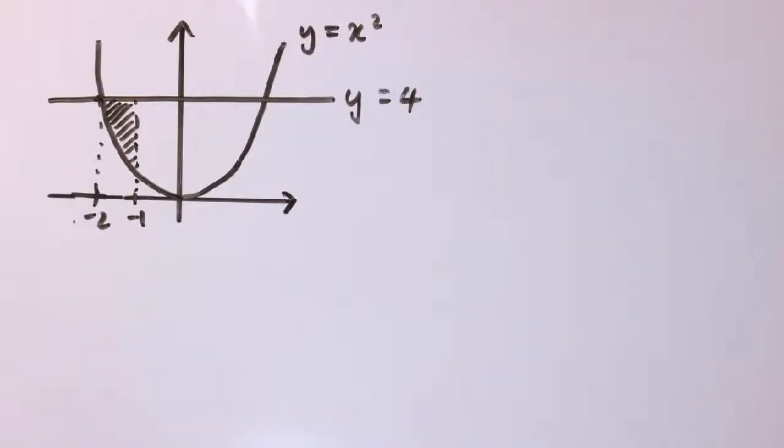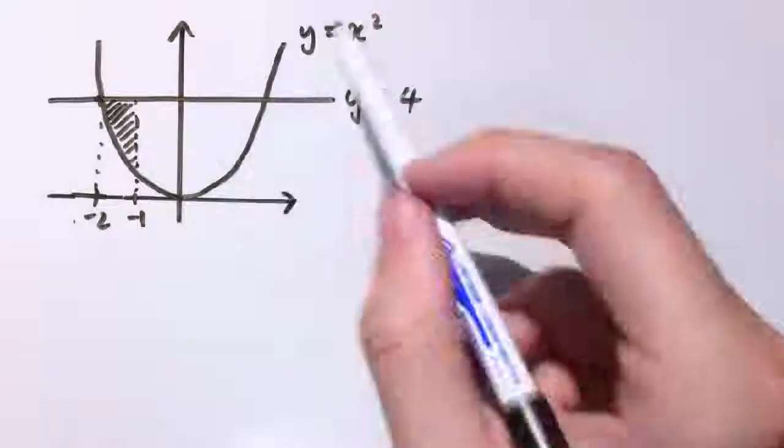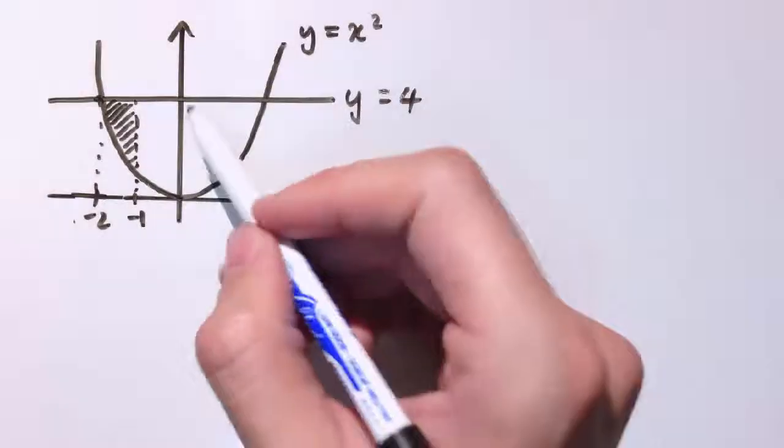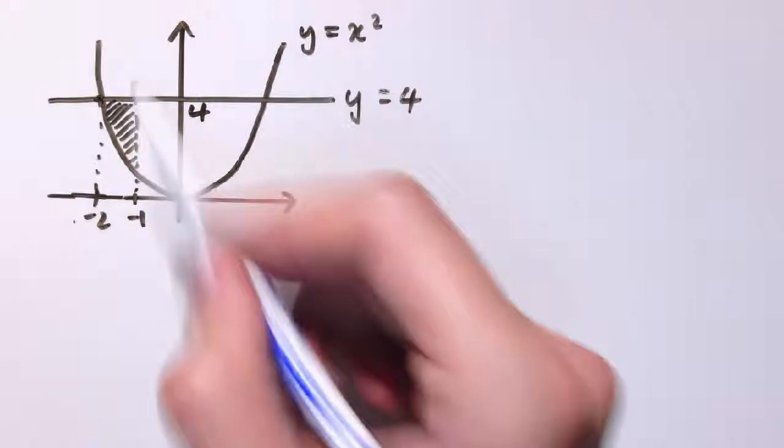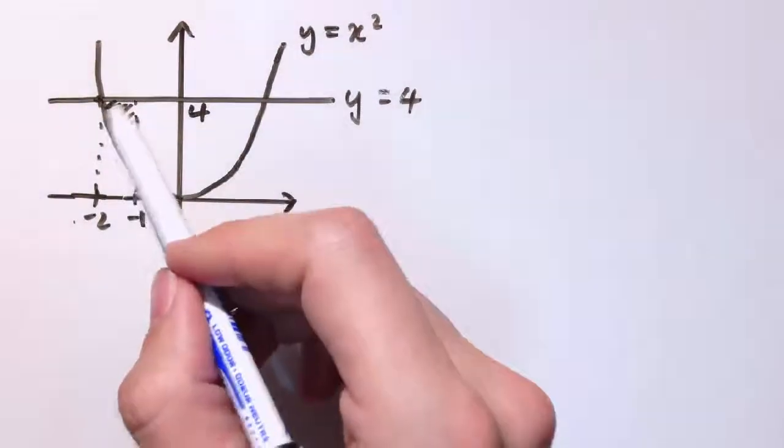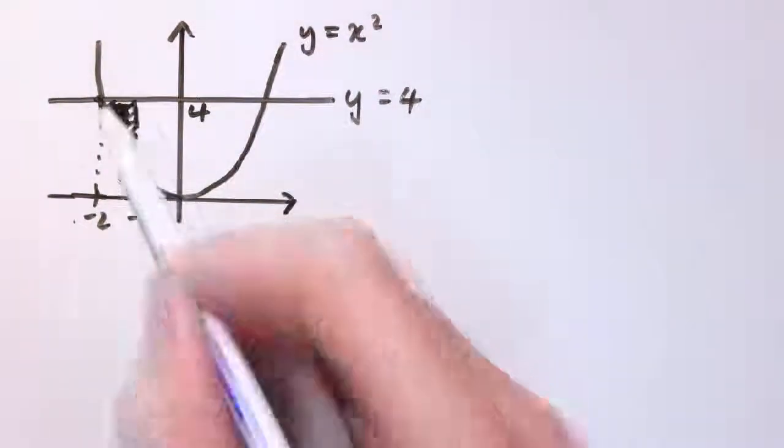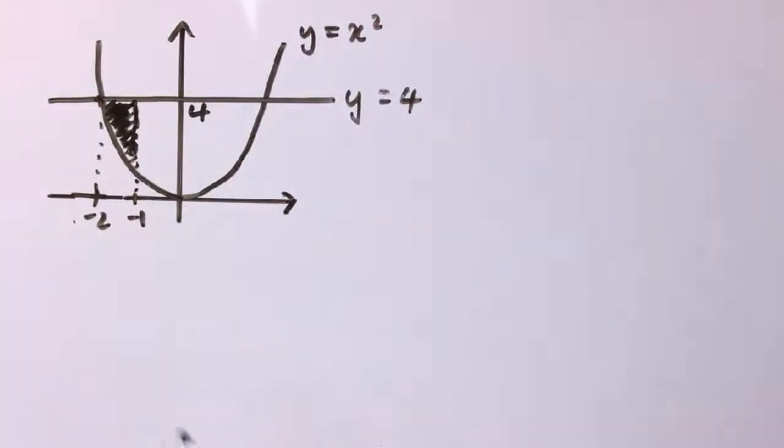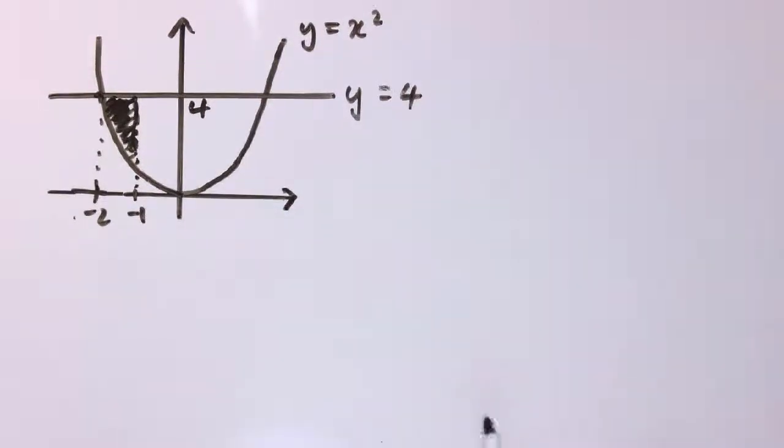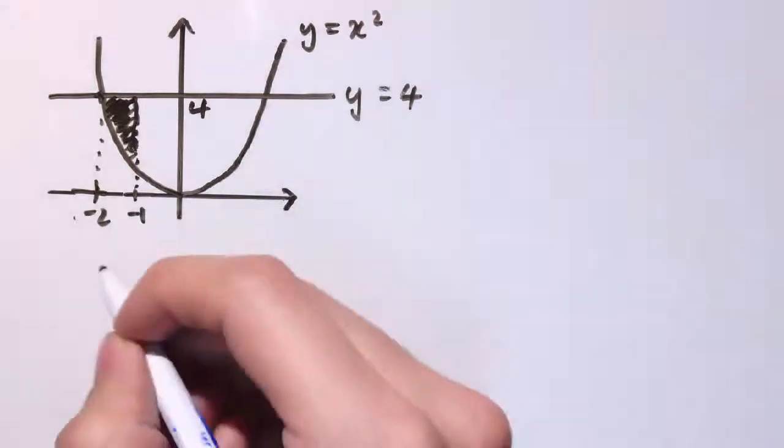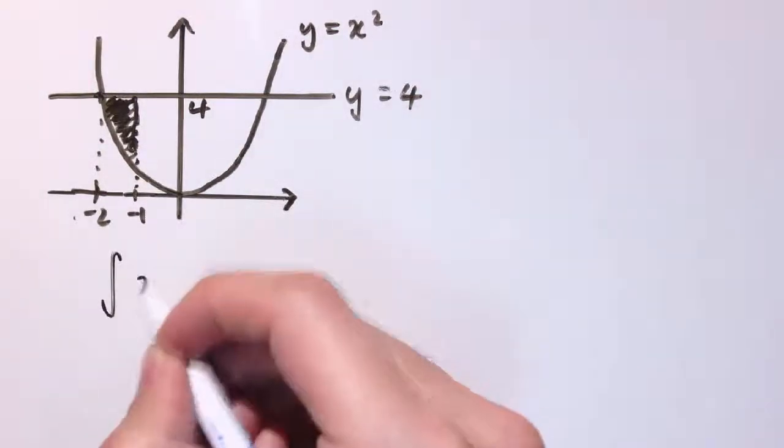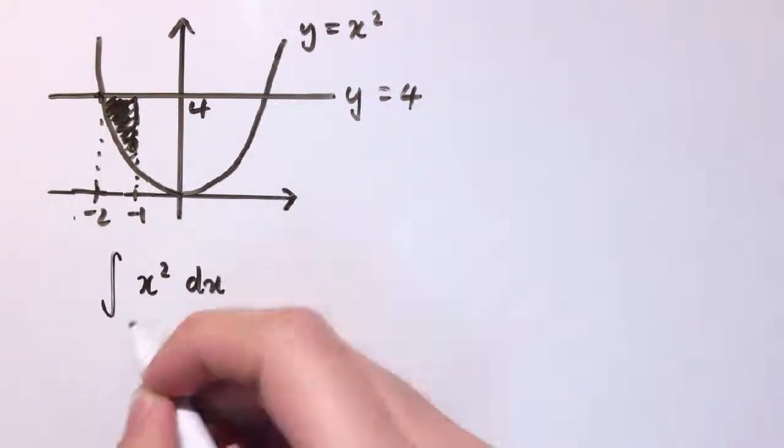Okay, slightly tricky example here. Now, I've got y equals x squared and y equals 4, x equals minus 1 and x equals minus 2. And I want to work out this area in here that's enclosed here. So, the most obvious thing to do, which we will do, is to work out the integral of x squared with respect to x between minus 1 and minus 2.